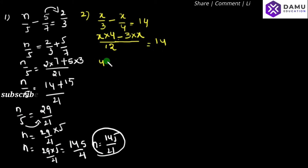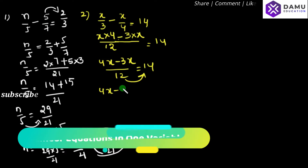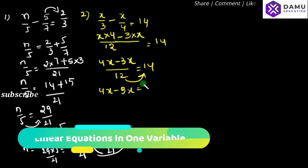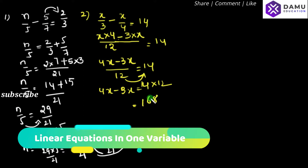Then 4x minus 3x by 12 will be equal to 14. Shifting the 12 to the right side gives 4x minus 3x equals 14 into 12, which is 168. Taking common, 4 minus 3 into x equals 168, so x will be equal to 168.